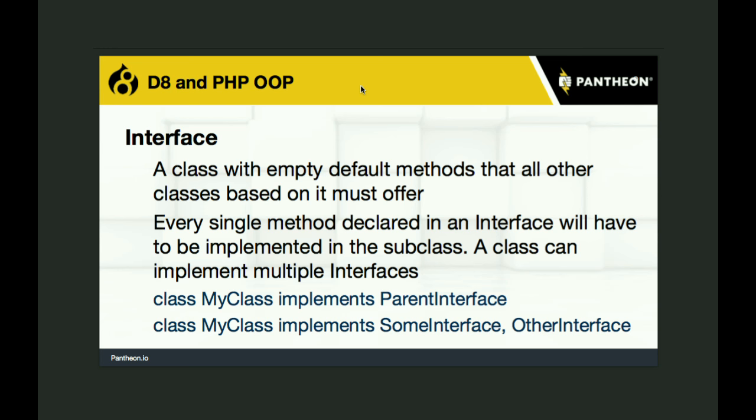An interface is a special kind of class that has empty default methods inside. If you want to create your own custom emailer, you use an email interface and you must use all of its methods, but you change all the internals of those methods — that's how you make your own custom emailer based on an emailer interface.